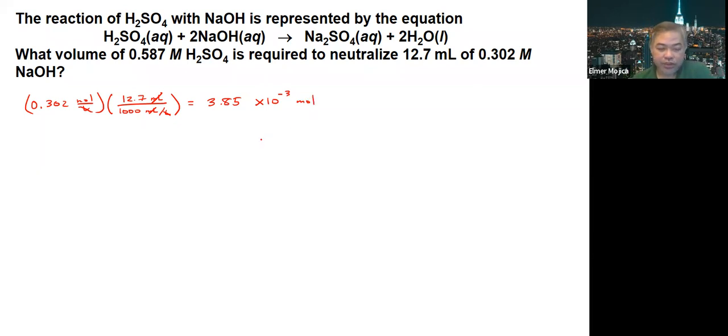We can use that to determine how many moles of H2SO4 you need. We put 3.85 times 10 to the negative 3 moles of NaOH, and based on the reaction, for every 2 moles of NaOH, you have 1 mole of sulfuric acid.